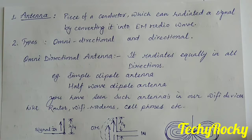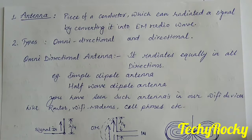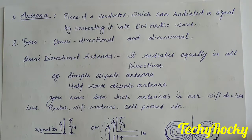Very less or negligible radiation occurs in other directions. In the last section we discussed lobes — main lobes and side lobes. In a directional antenna, main lobes decide where it radiates more, and side lobes carry very little or unwanted signal. Efficiency is measured in the particular direction for which the antenna is designed.